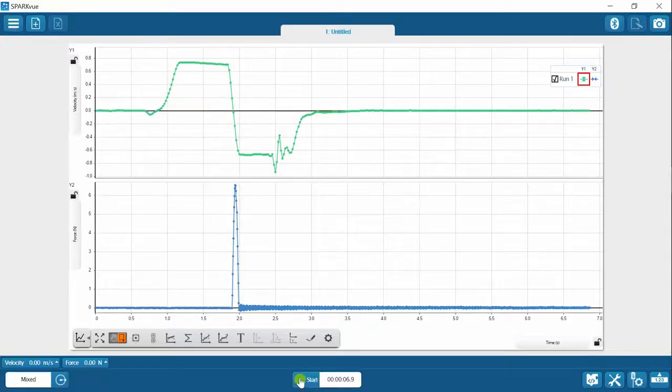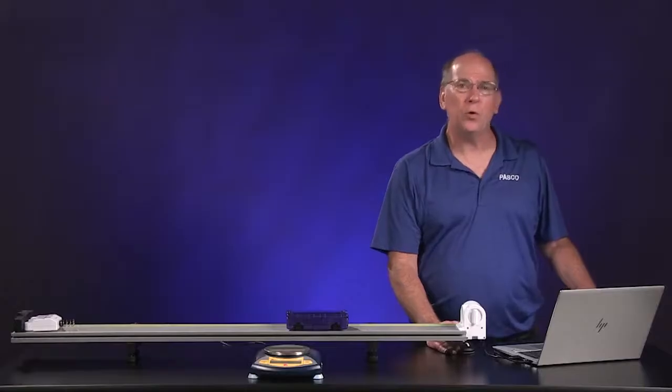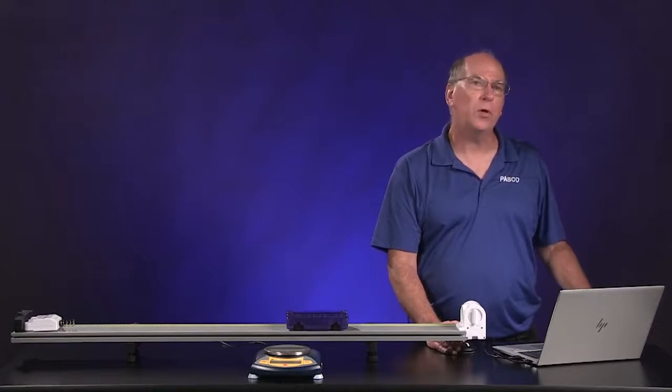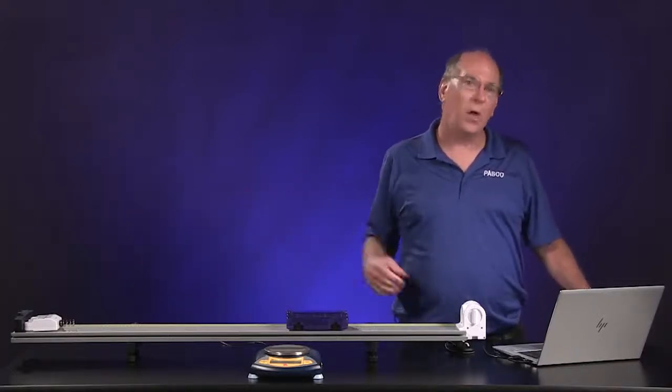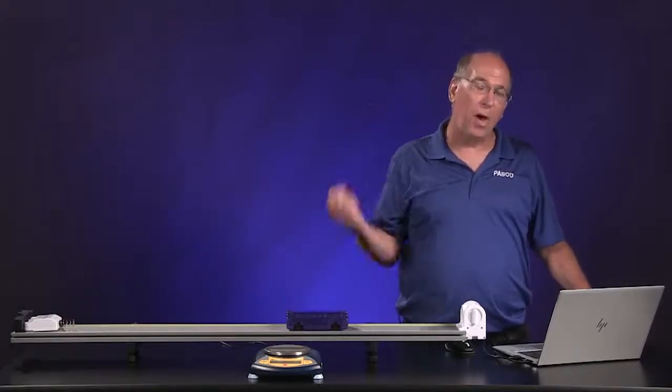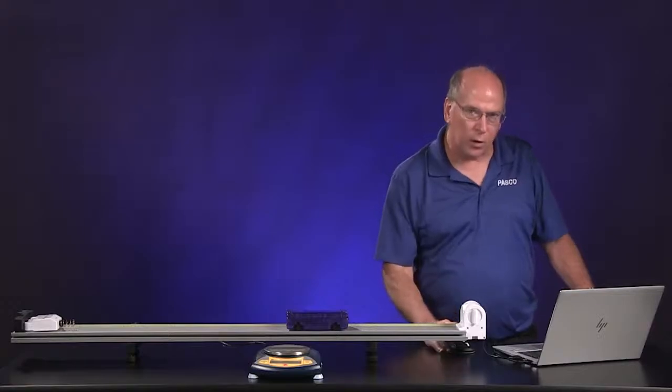We can see where the collision occurred on the velocity graph and the force graph. On the velocity graph, the velocity changes from positive to negative during the collision. We can measure the velocity just before and just after the collision to find the change in velocity. Since the motion sensor measures moving away from it as positive, the velocity changes from positive to negative during the collision.